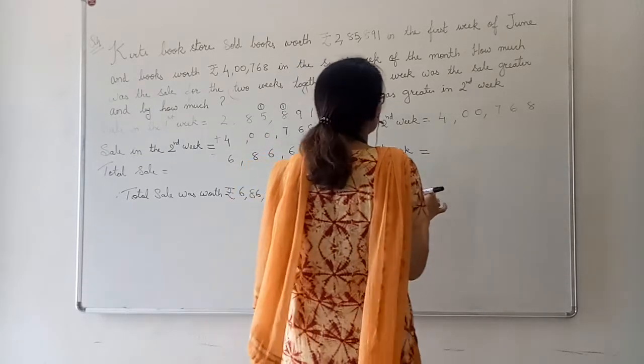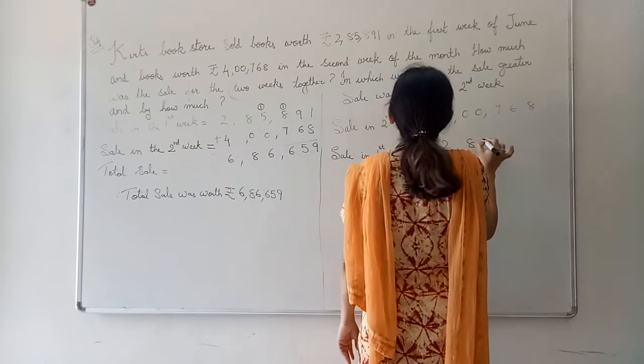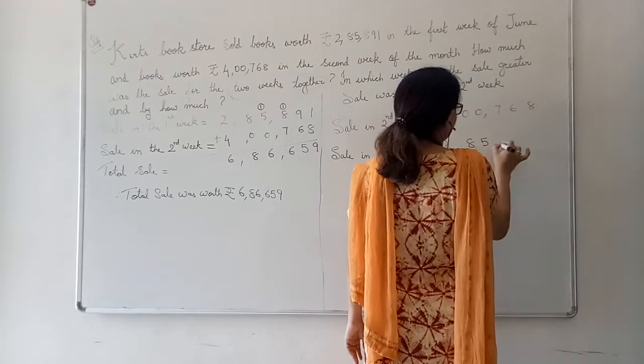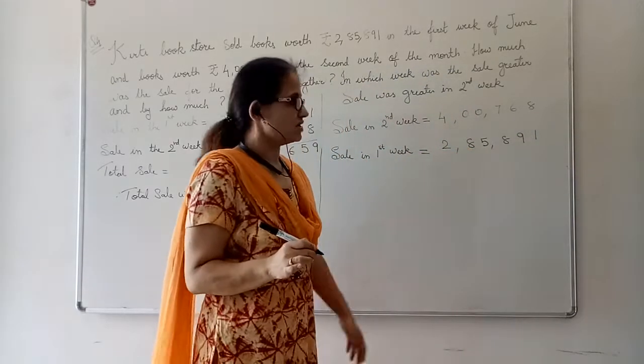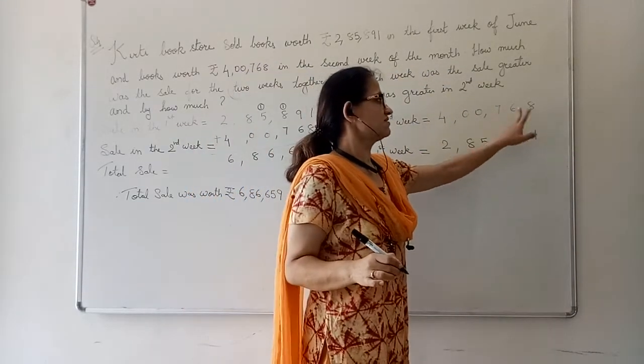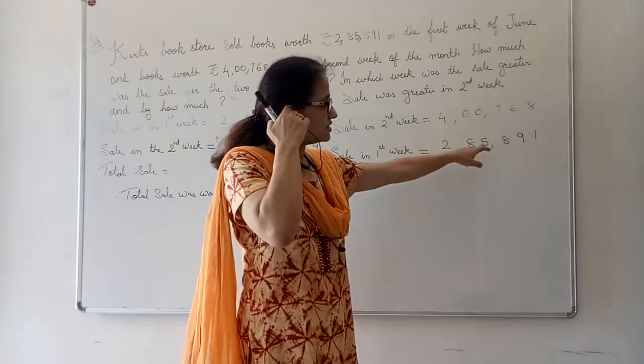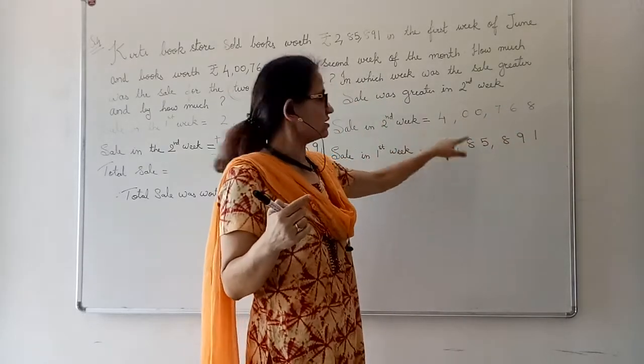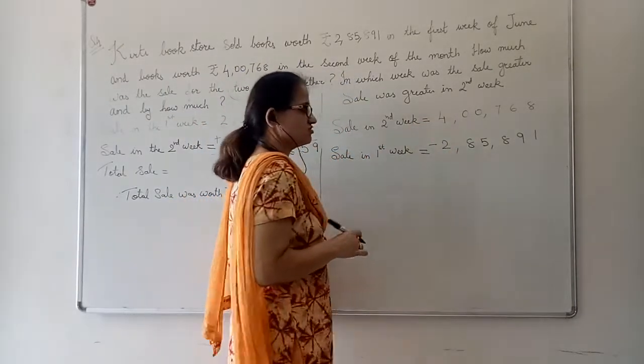Sale in the first week. It was 2,85,891. Keeping in mind that we write 1s under 1s, 10s under 10s, 100s under 100s, 1000s under 1000s, 10,000s under 10,000s and lakhs under lakhs.